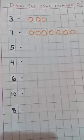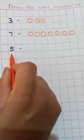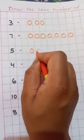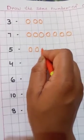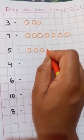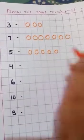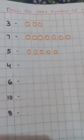Now, draw 5 circles. 1, 2, 3, 4, 5. 5 circles.